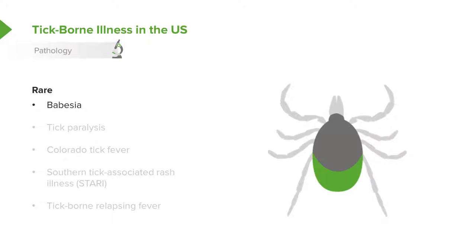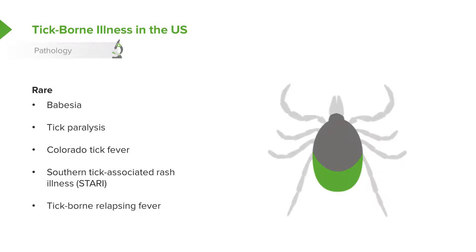There are other diseases in the United States that are also spread by ticks but are very rare. Babesia is found in the northeast along the shore and causes high fevers — it's somewhat similar to malaria. Tick paralysis is a disease where a patient will become acutely, flaccidly paralytic, and as soon as you remove the tick, the patient starts improving and can walk home. Colorado tick fever is fairly rare, as is southern tick associated rash illness, or STARI, and tick-borne relapsing fever.